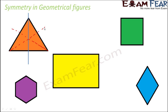So if it is an equilateral triangle, it would have three lines of symmetry. But if we are talking about an isosceles triangle, in that case it would have only one line of symmetry. So depending on what kind of triangle we are talking about, the number of lines of symmetry would vary.